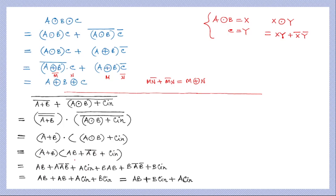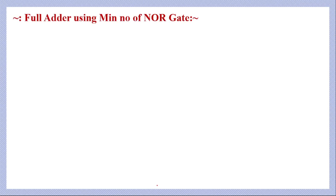Continuing the simplification: after distributing B over the same terms, we get A·B and B·C_in. Combining all non-zero terms — A·A·B = AB, B·A·B = AB, A·C_in, and B·C_in — and applying Boolean algebra (AB + AB = AB), the final simplified expression is AB + A·C_in + B·C_in. This matches exactly the carry output expression of a full adder.